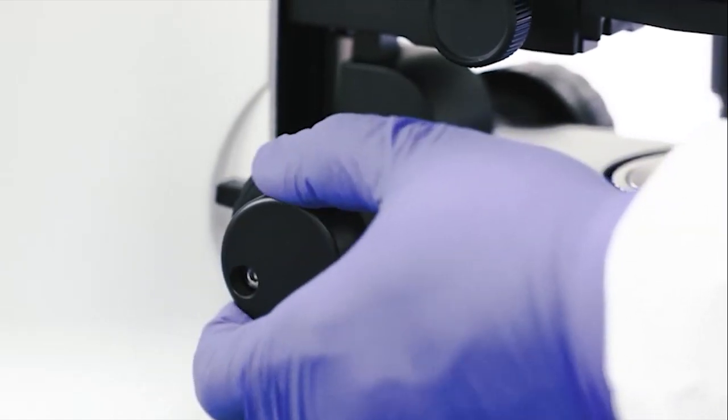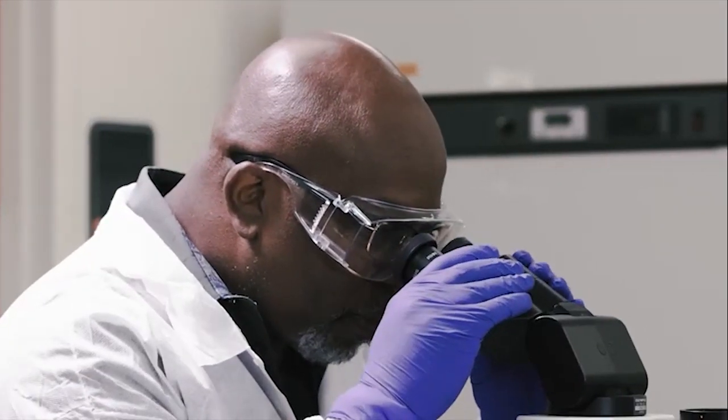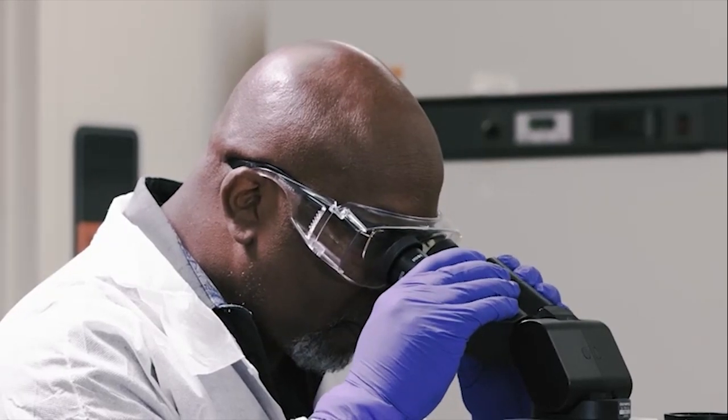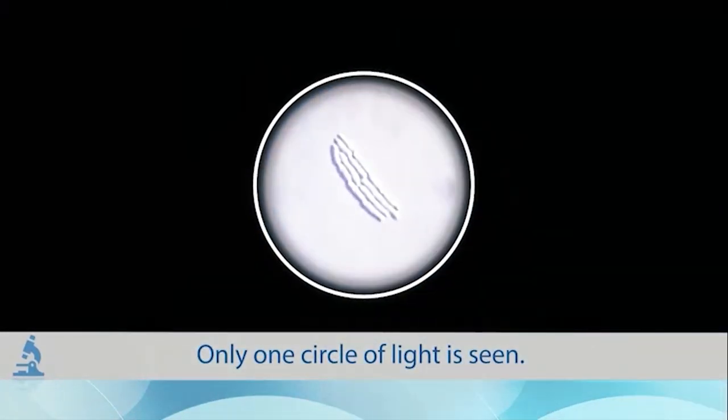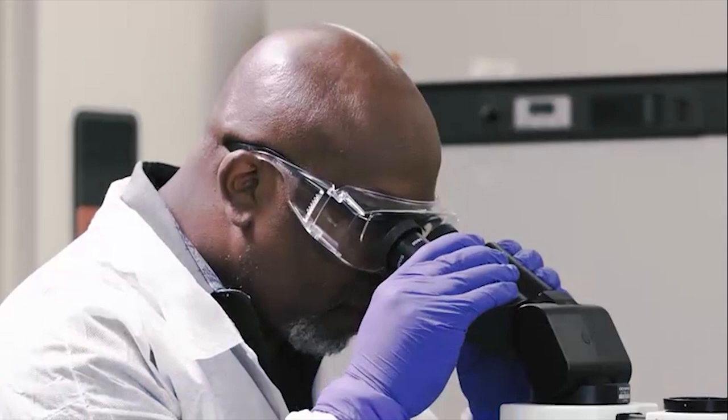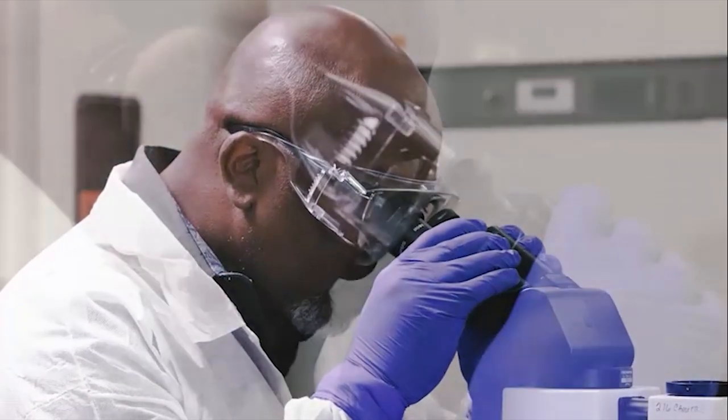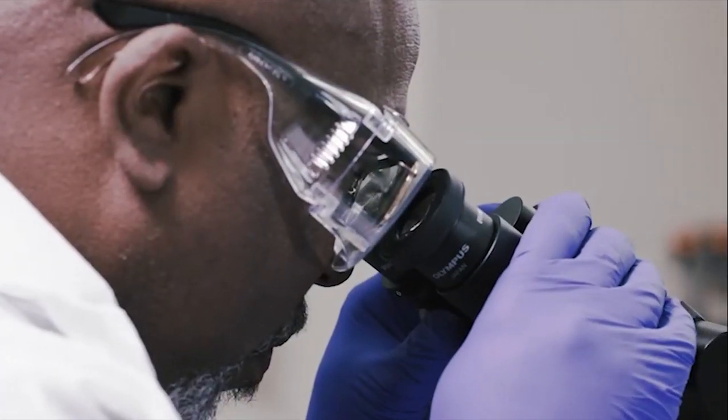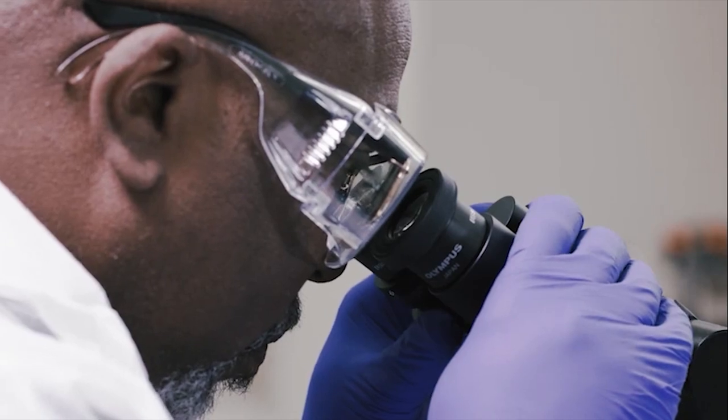Adjust the oculars for interpupillary distance so when looking with both eyes only one circle of light is seen. This should be done for the particular individual reading since the interpupillary distance can vary from person to person.